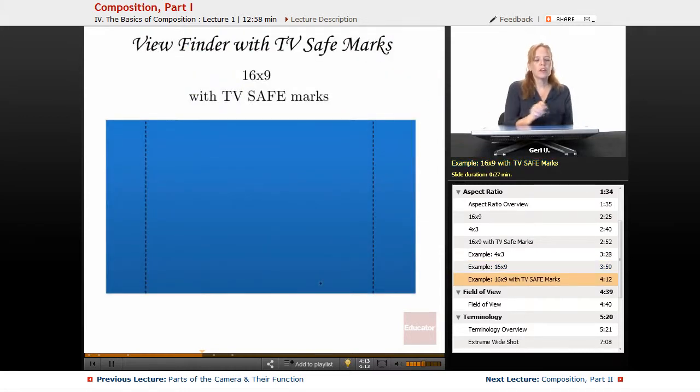Here's an example of a viewfinder with TV safe marks. You see these dotted lines - the dotted lines here are for TV safe. Sometimes you'll see little corners. This is another way that it might look. Just depending on your viewfinder, you'll have different types of TV safe marks.